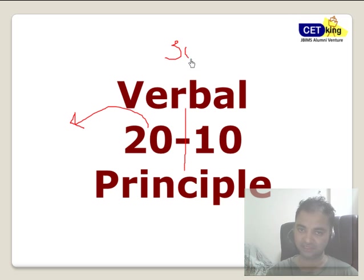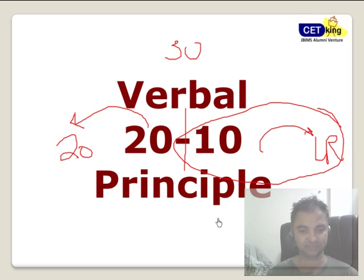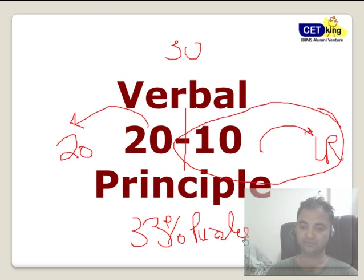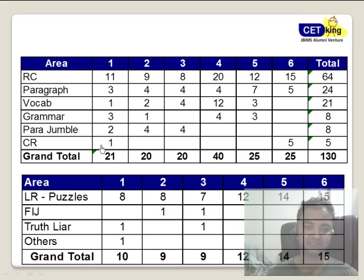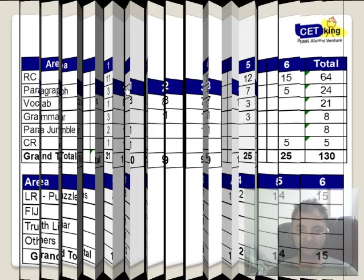Going to the verbal 2010 principle: in the verbal section, out of 30 total questions, 20 questions come from verbal and 10 questions from the logic section. For those who are weak in logic, 33% of your paper is going to be LR — mainly puzzles, which everyone can do. So the overview: roughly 20-21 questions on verbal and 9-10 on LR.